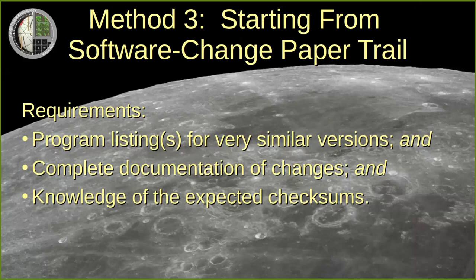But what if there's neither a printout nor a physical memory module? Under the rare conditions listed in this slide, an AGC software version can sometimes be reconstructed anyway. First, you clone the source code for the software version you think is closest to the one you want to reconstruct. Then one by one, you edit in each of the software changes that are described in the Apollo-era paper trail — mostly by pasting code from a similar AGC version in which the same change had also been made. You assemble the source code, and if the checksums are as hoped for, success. For example, the Apollo 10 command module software and the Apollo 14 LEM software were reconstructed in exactly this way.